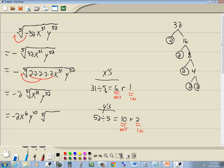Then the fifth root, how many x's we have left inside is 1x. And we're going to have 2 y's left inside.